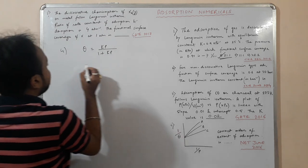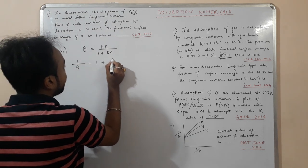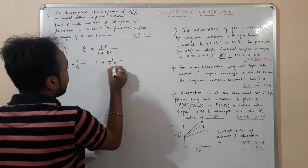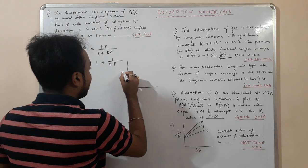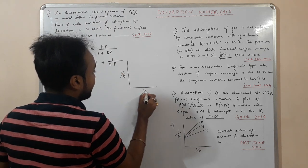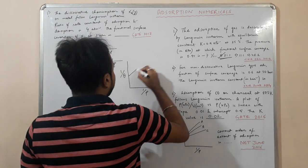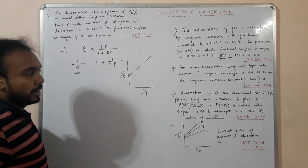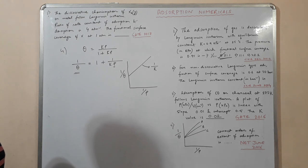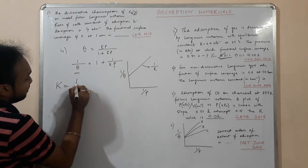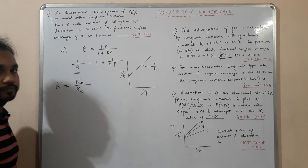From the Langmuir isotherm, theta equals Kp by 1 plus Kp. That is, 1 by theta equals 1 plus 1 by Kp. If we plot 1 by theta versus 1 by P, we will get a straight line with the intercept of 1 and the slope as 1 by K. We know K is basically rate constant of adsorption by rate constant of desorption.